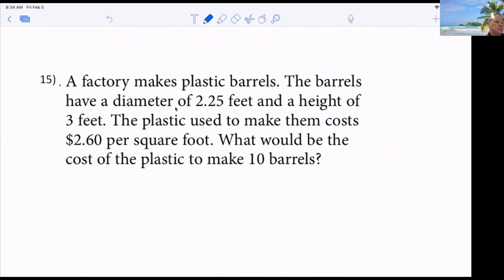Here we go. A factory makes plastic barrels. The barrels have a diameter of 2.25, a height of 3. The plastic used to make them cost 260 per square foot. What would be the cost to make 10? How much? Somebody said 26 bucks. Anybody else? 110 point what? 112 point what? 15. Good. How much? I didn't hear you. 92. 81. What is it, Bo?